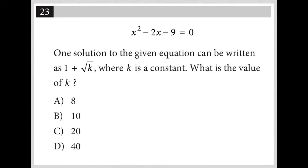This question starts off by providing this quadratic equation: x² - 2x - 9 = 0. The question goes on to say one solution to the given equation can be written as 1 + √k, where k is a constant. What is the value of k?